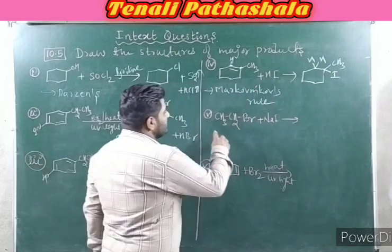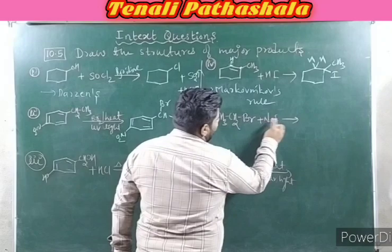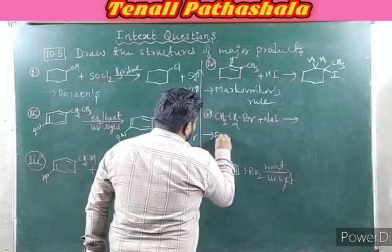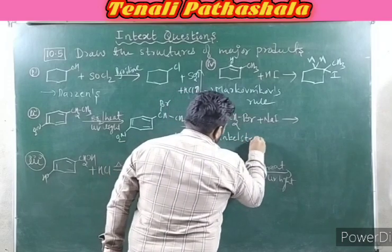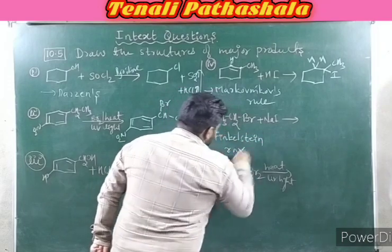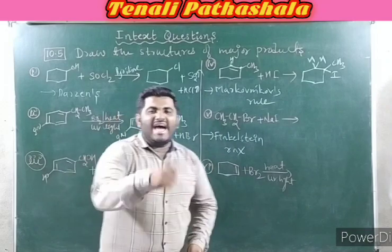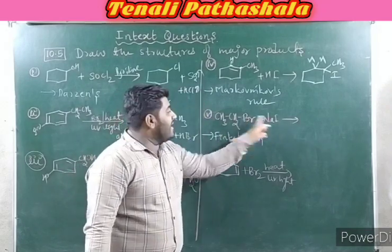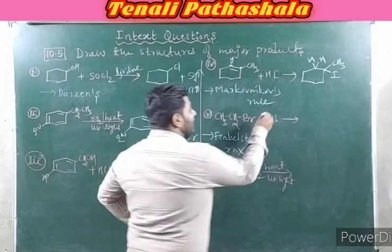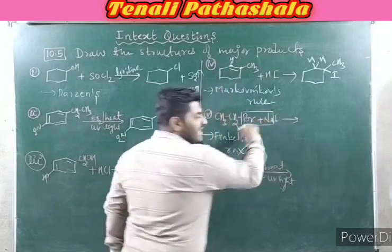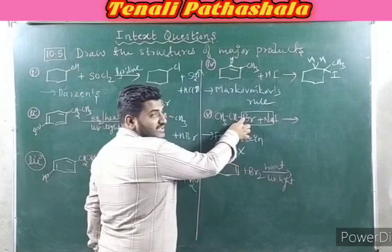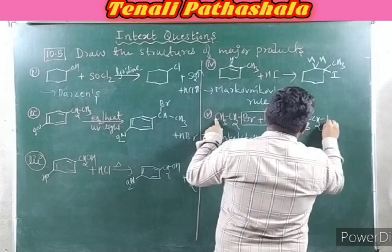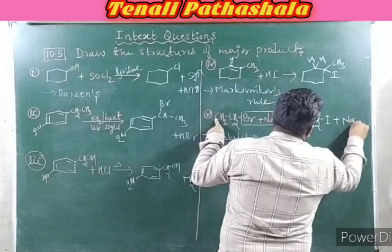Fifth question: CH₃CH₂Br with NaI — this is a Finkelstein reaction. In the Finkelstein reaction, halogen exchange takes place: bromine is replaced by iodine, and NaBr is eliminated. Iodine comes in place of bromine. So you get CH₃CH₂I plus NaBr.